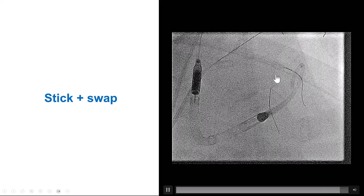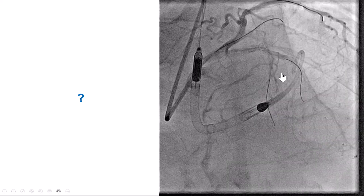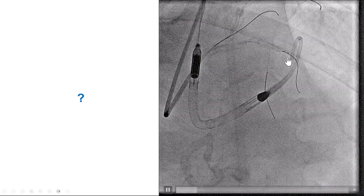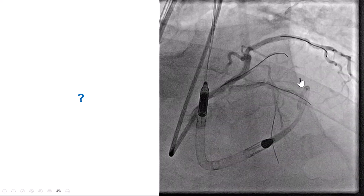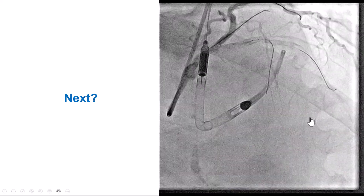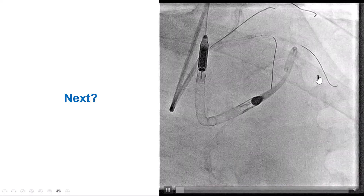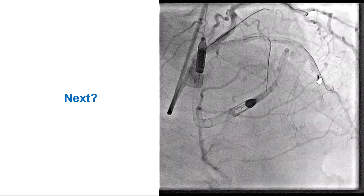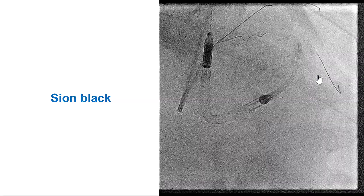We then tried to re-enter. We knew this would be a difficult task because of the calcification. We tried stick-and-swap with various guide wires — an Astato, a Hornet 14, a Gaia Next 2 — and then tried to re-enter with a Pilot 200. Unfortunately, we were unable to get into the true lumen. The wire kept going into the extravascular space. After multiple attempts, we could clearly see the wire was extravascular.